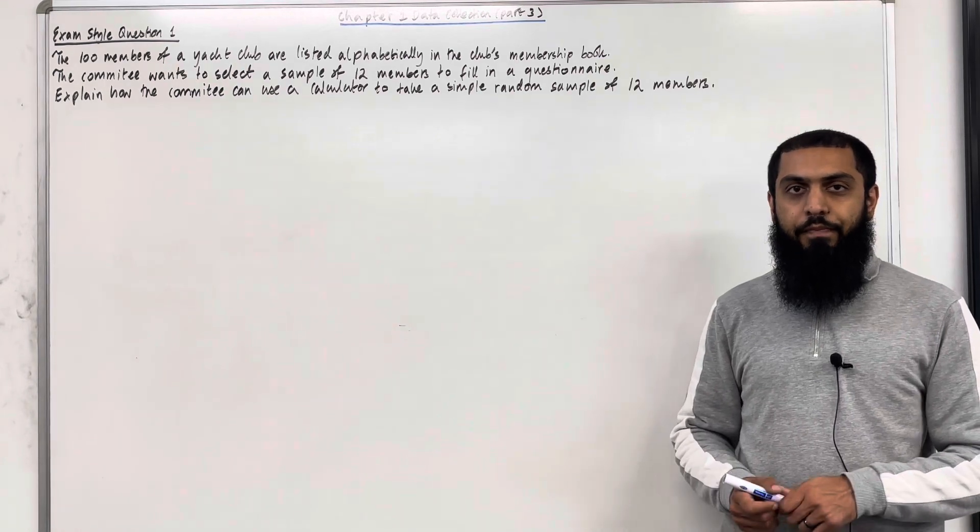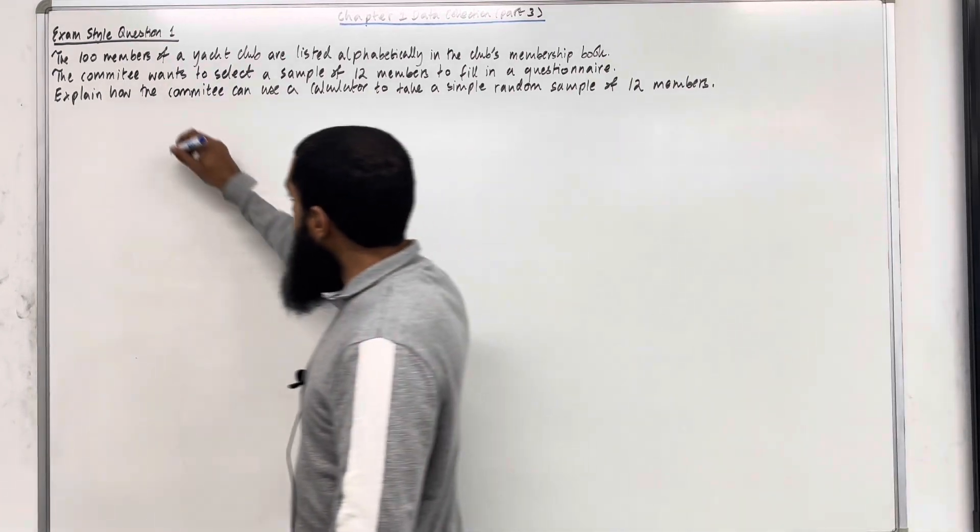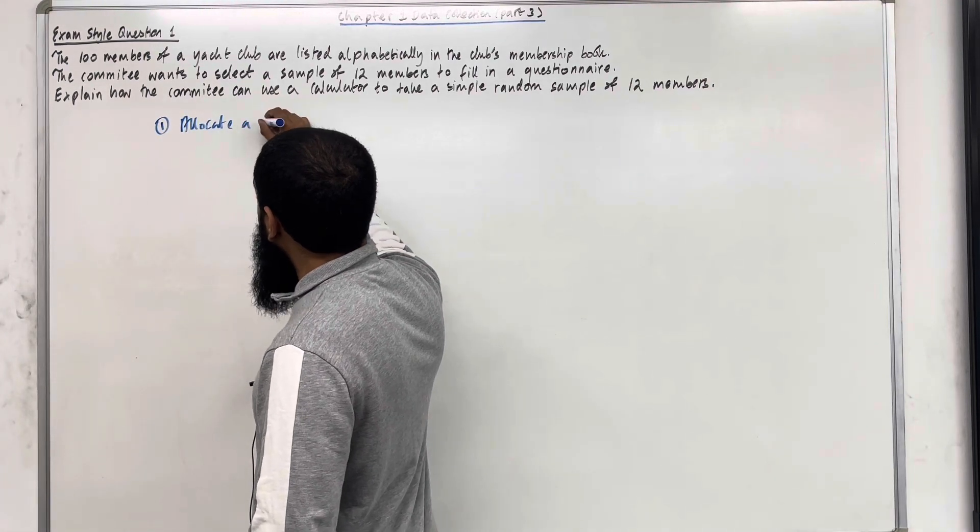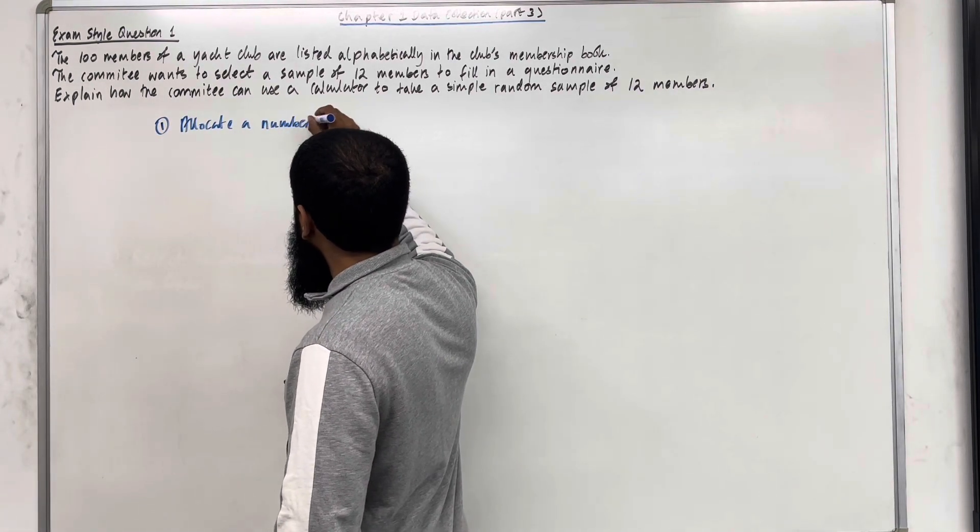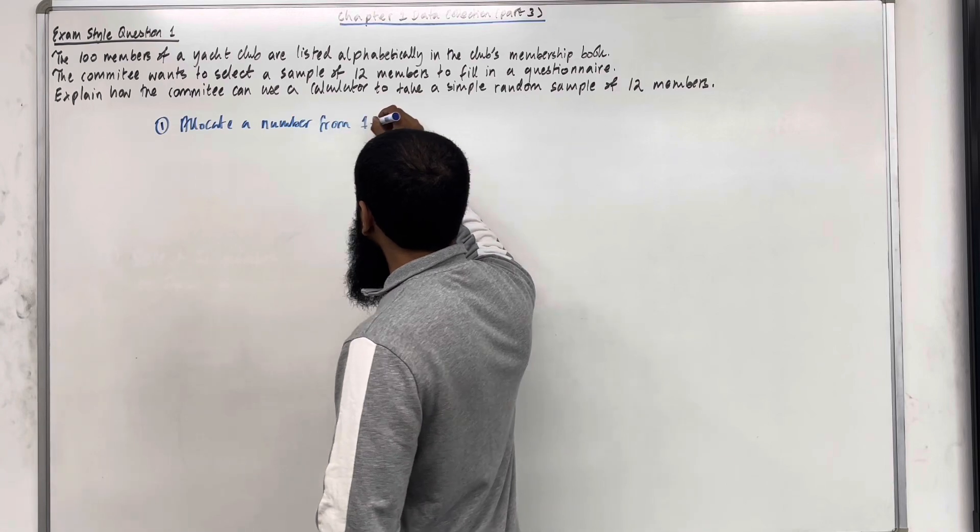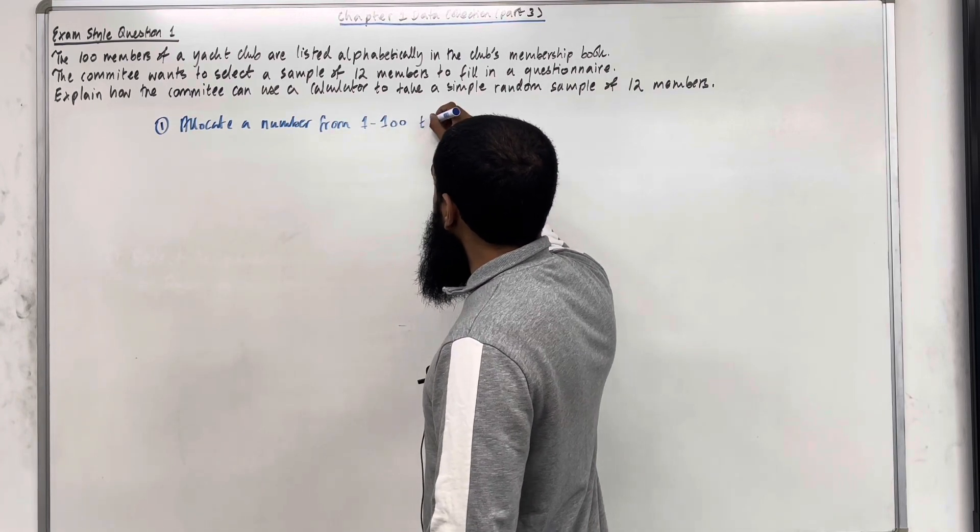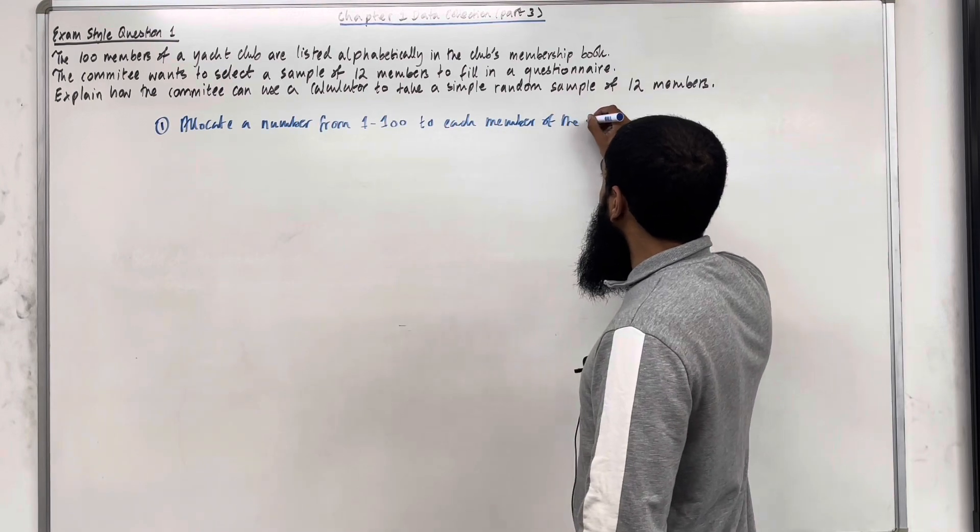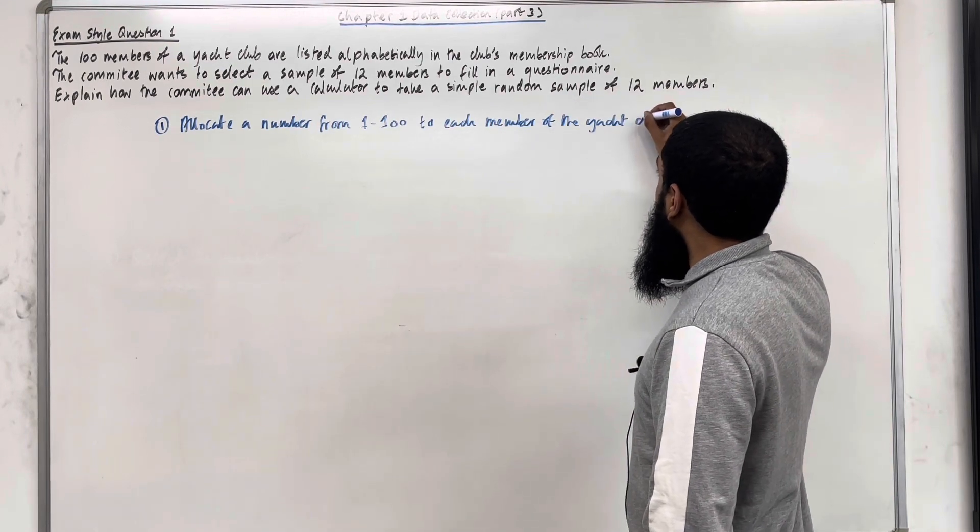Let's have a look at the solution. Step number 1: Allocate a number from 1 to 100 to each member of the yacht club.